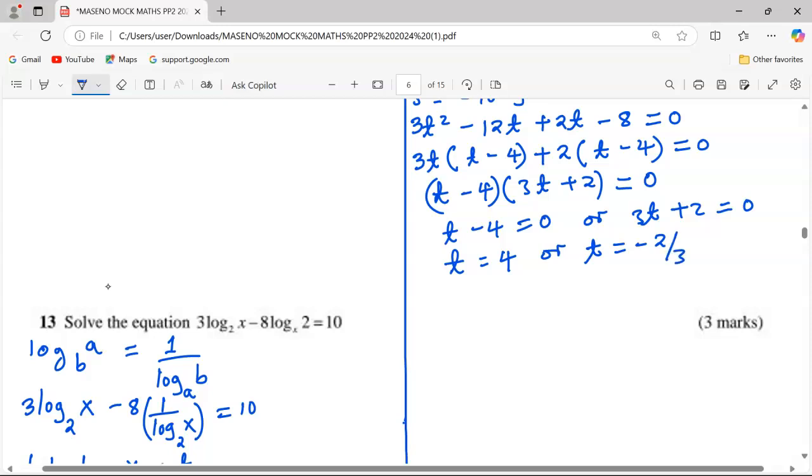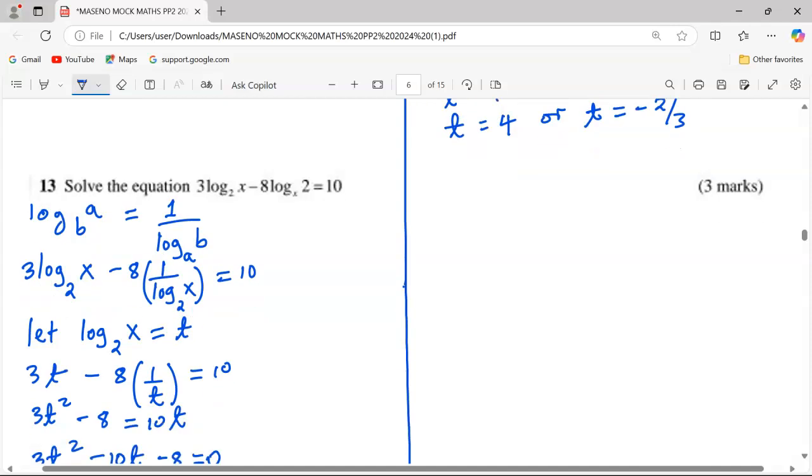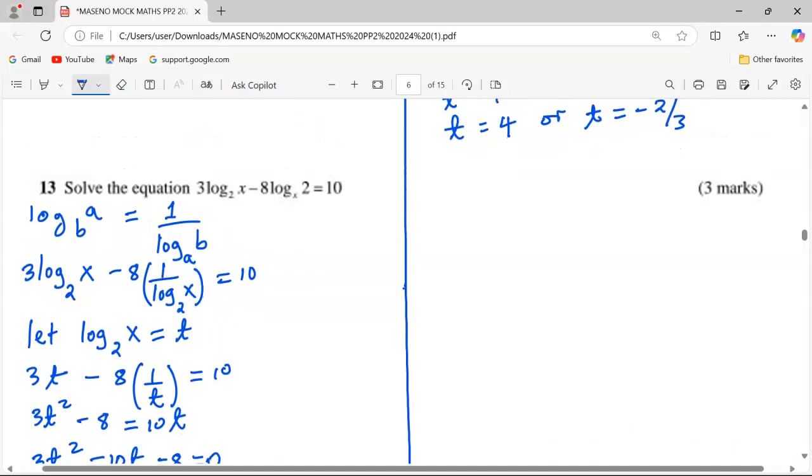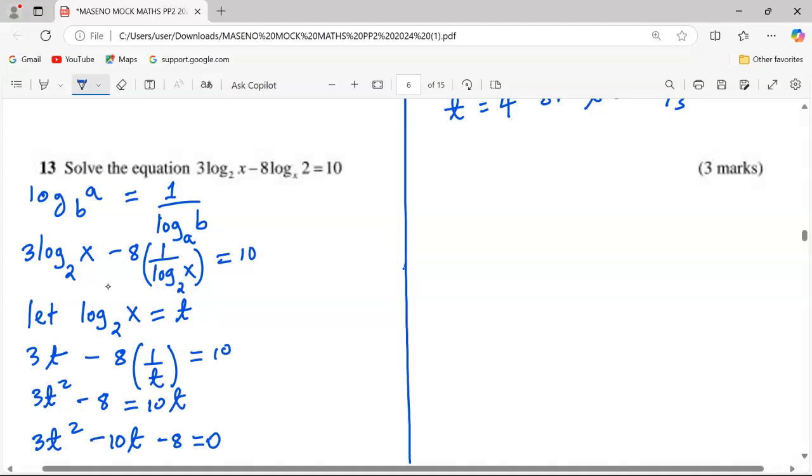Those are the two possible values of t. But what is the value of t? That is log₂(x). So we can say hence log₂(x) can either be 4 or log₂(x) can be -2/3.